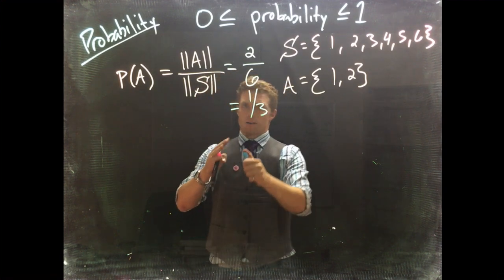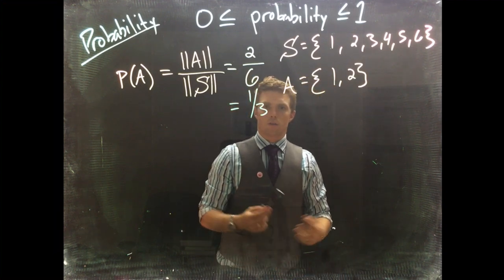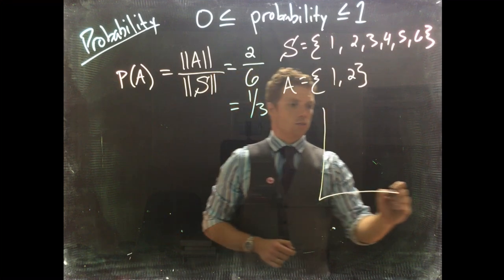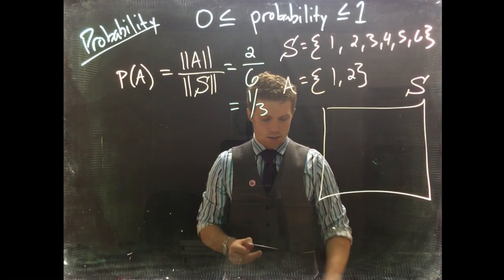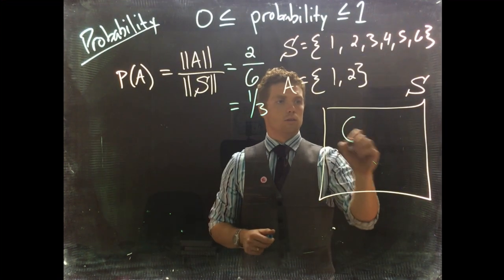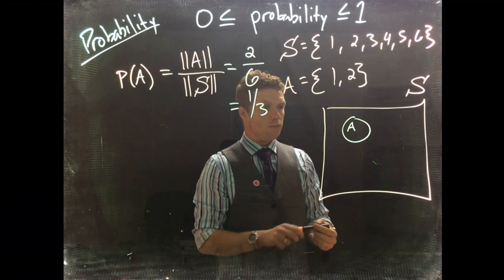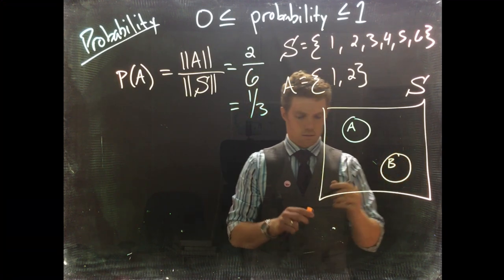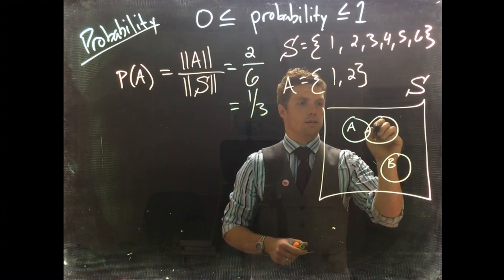Now we can ask some other questions. When we have our sample space defined by our box and an event on the inside A, we can have another event B and a third event C.